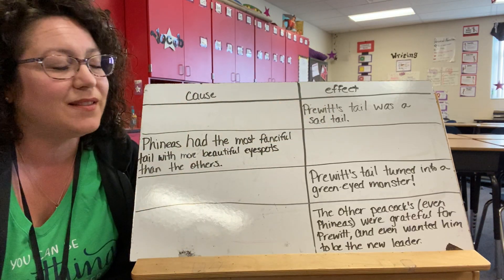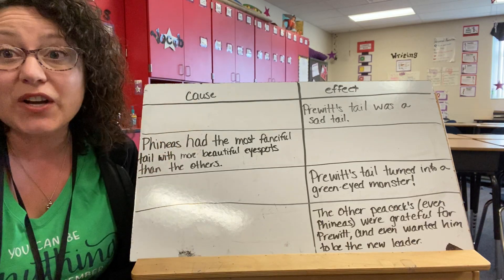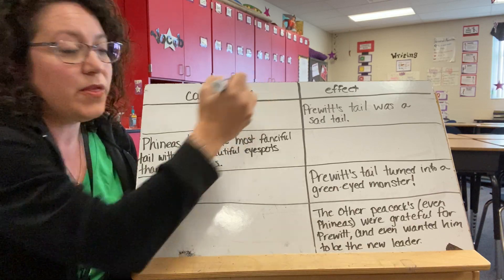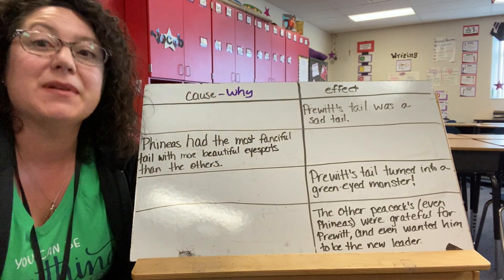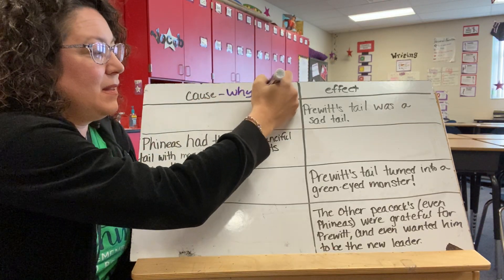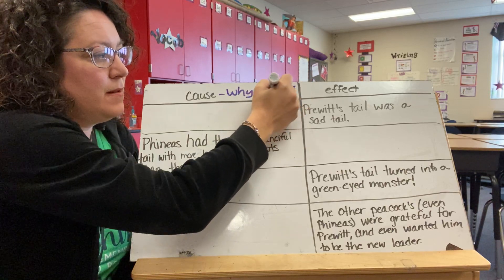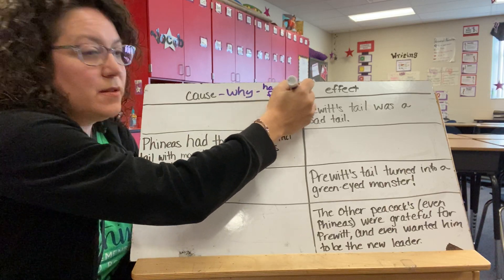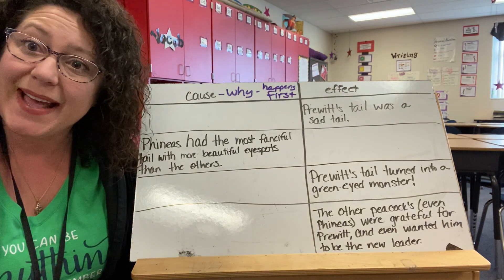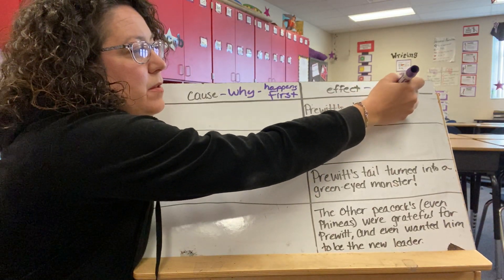Let's review. We've been talking a lot about cause and effect, and I know you're getting really good at it. Remember, the cause is the why — why something happens — and the cause happens first. You might want to write that on your paper too. And the effect happens second, and the effect is the result — what happens.